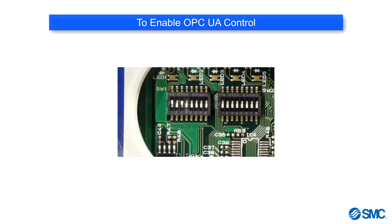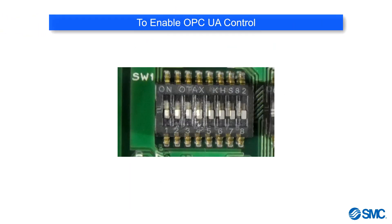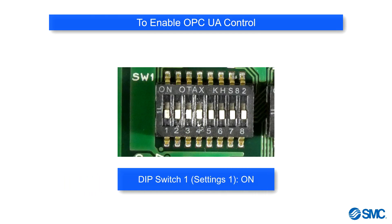We can use OPC UA to monitor data from the system. However, to enable control, we first need to set DIP Switch 1 in the Setting 1 section to ON.